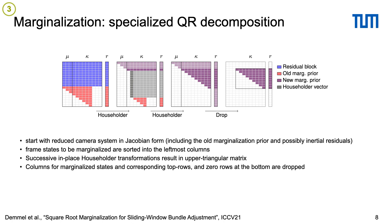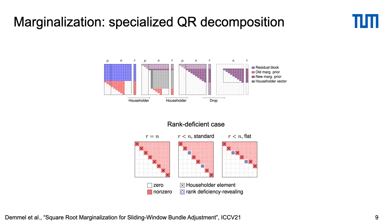We drop columns for marginalized states and corresponding rows at the top, as well as all zero rows at the bottom to extract the compact new prior. In the paper, we also discuss how the case of rank-deficient Jacobians is included naturally.